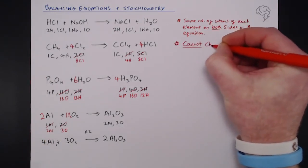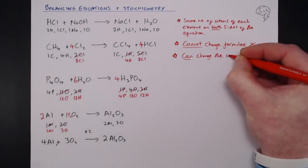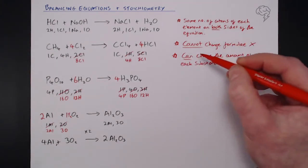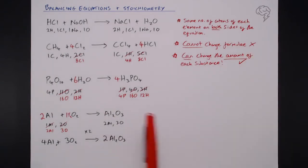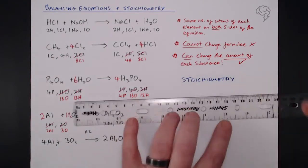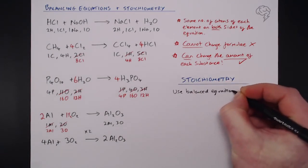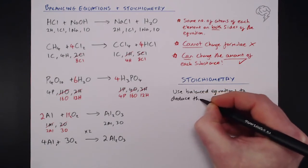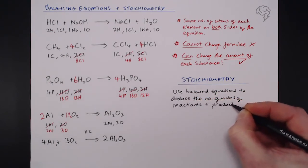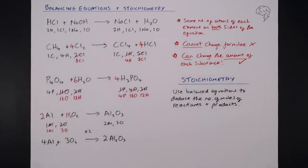So the rules: we can't change the formula of substances like phosphoric acid or aluminium oxide, but we can change the amount of each substance by putting coefficients in front. By balancing equations — even at GCSE — you've been playing with numbers of moles, and this is where stoichiometry comes in. Stoichiometry is the process whereby we use balanced equations to deduce the number of moles of reactants and products. These large coefficients represent numbers of moles.